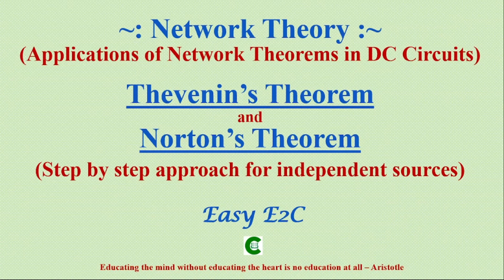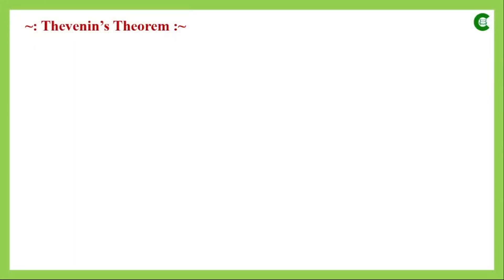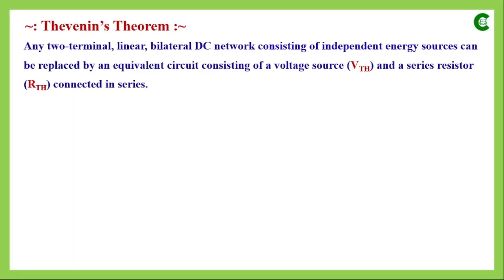This concept will be more clear when we learn these theorems with examples. First we will learn Thevenin's theorem. The statement says that any two terminal linear bilateral DC network consisting of independent energy sources can be replaced by an equivalent circuit consisting of a voltage source denoted by VTH and a series resistor denoted by RTH connected in series.